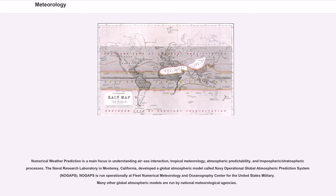Numerical weather prediction is a main focus in understanding air-sea interaction, tropical meteorology, atmospheric predictability, and tropospheric-stratospheric processes. The Naval Research Laboratory in Monterey, California, developed a global atmospheric model called Navy Operational Global Atmospheric Prediction System, NOGAPS. NOGAPS is run operationally at Fleet Numerical Meteorology and Oceanography Center for the United States Military.